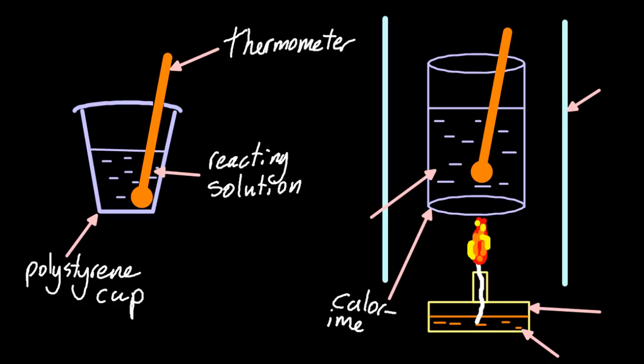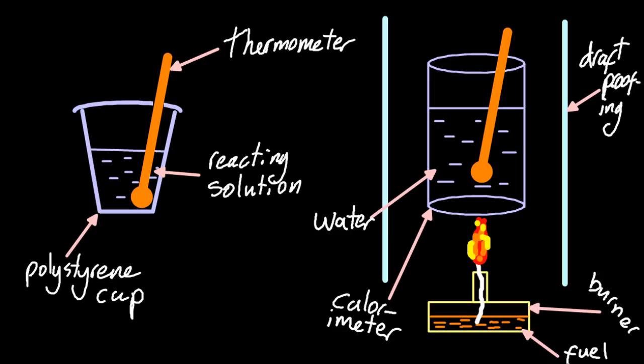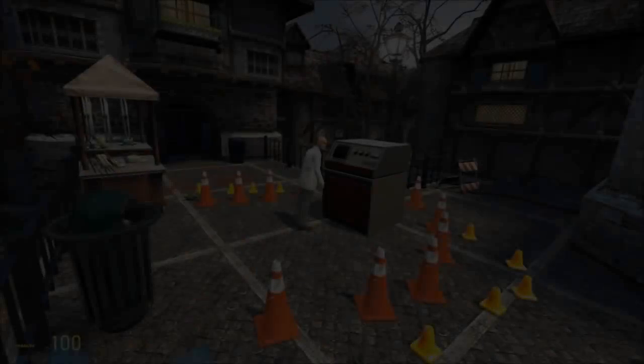For the second example, we have a calorimeter. We have some water there, and underneath is a fuel that's being burnt in a burner. So the energy is going to be transferred by combustion to the water in the can. Some draft proofing will also give you better results. And again, that would be Delta H equals minus mc delta T for what's being heated.